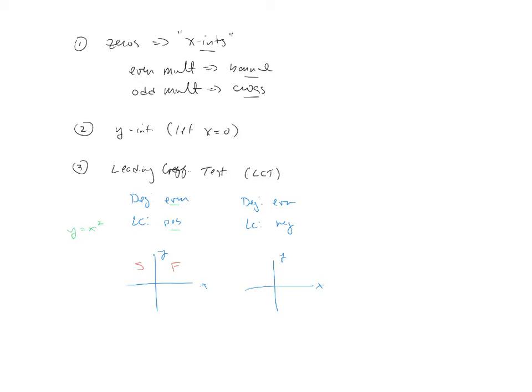Similarly, if we have an even degree and a negative leading coefficient, well, that's just the parabola flipped upside down. So, the leading coefficient test generalizes and says that they all start in quadrant three and finish in quadrant four.